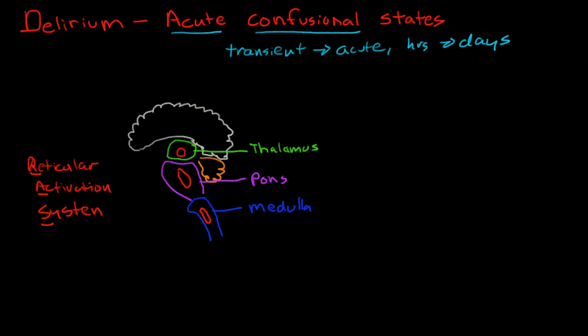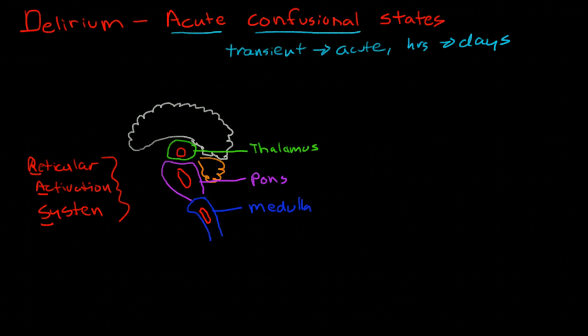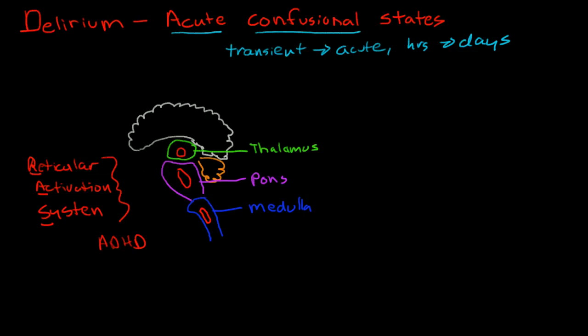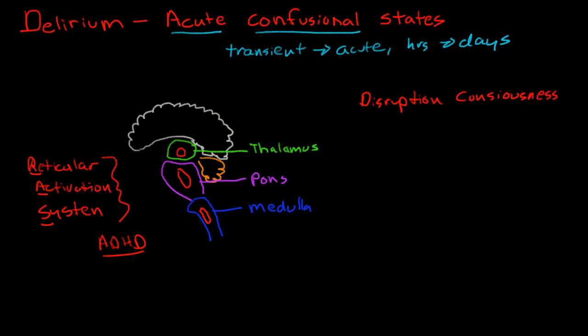These areas of the reticular activation system are involved in several different pathologies, including ADHD, and can be involved in chronic dementias as well. But in this particular case, we're talking about how it is involved in the acute confusional state. So the acute confusional state is defined by a disruption of consciousness, so an altered state of consciousness, a loss of cognition or decreased cognition.